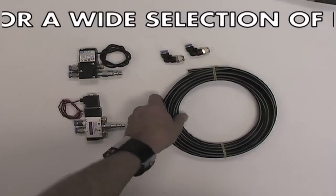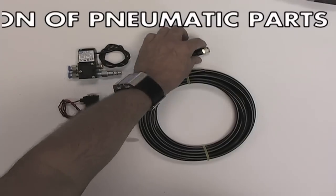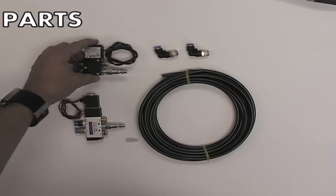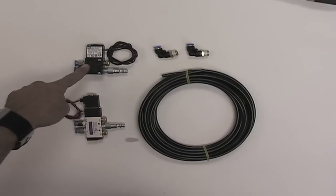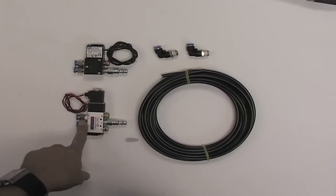Our Double Acting Hookup Kit comes with 20 feet of air line, two 90 degree elbow fittings for the cylinder, and your choice of a MAC brand 4-way valve or an STC brand 4-way 5-ported valve.